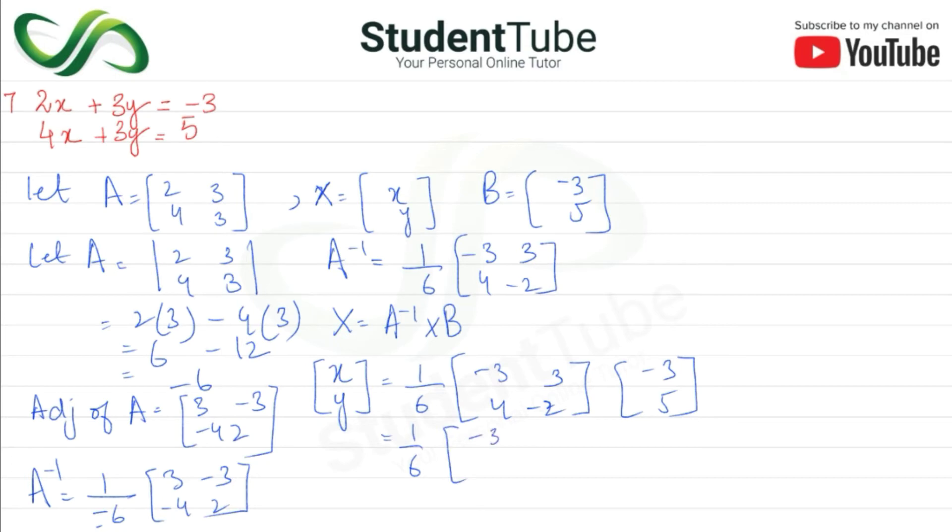Yahaan per hi aega minus 3 multiply by minus 3 plus 3 multiply by 5. 4 multiply by minus 3 plus minus 2 multiply by 5. 1 upon 6. 3 threes are 9 plus 5 threes are 15. 4 threes are 12 plus minus minus 10.